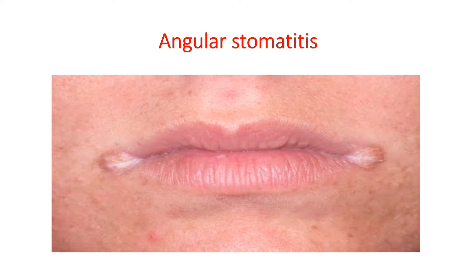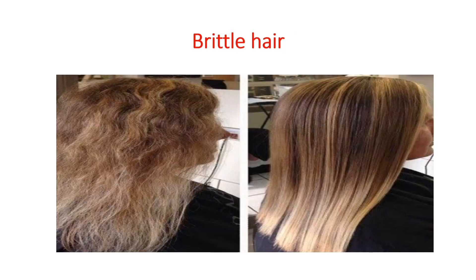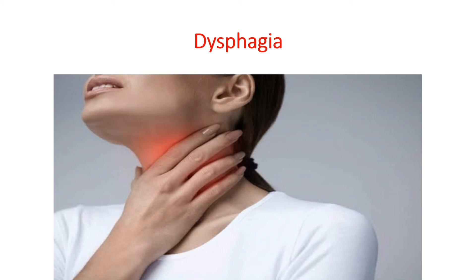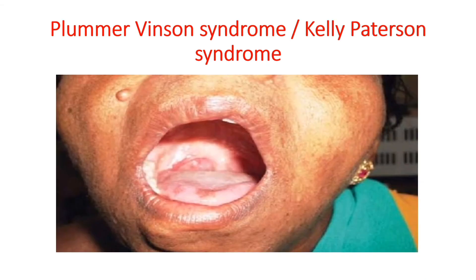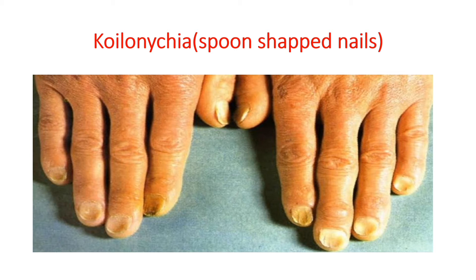Ulcers may develop at the sides of the mouth, which is called angular stomatitis. Similar to brittle nails, you may have brittle hair in which the hair becomes very soft and falls easily. You may also present with dysphagia or difficulty in swallowing. There may be web-like patches of membrane in the throat that may cause dysphagia, which is a typical sign of Plummer-Vinson syndrome or Kelly-Patterson syndrome. Koilonychia is nothing but spoon-shaped nails — usually losing convexity, becoming flat or even concave — which is a very typical sign of anemia.